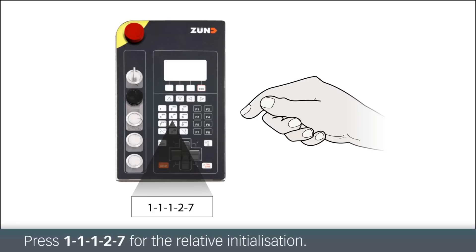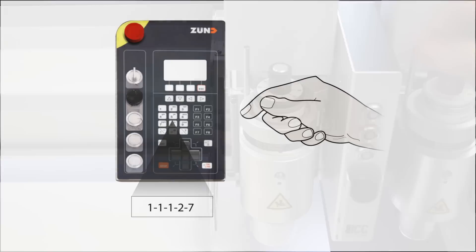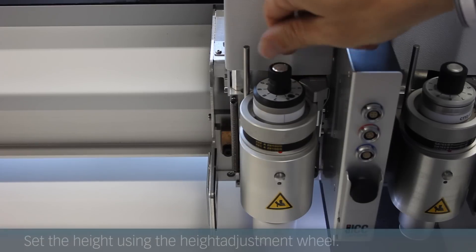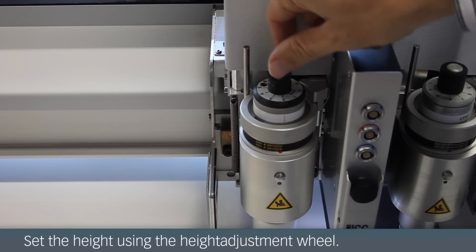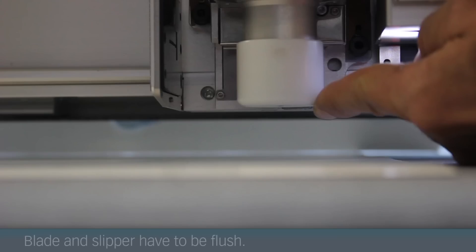For the relative initialization, press 11127. Use the adjusting wheel to set the height of the blade and flush it to the rigid glide shoe.